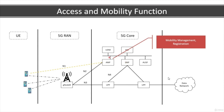That brings us to the AMF — access and mobility function. The AMF is primarily responsible for supporting devices as they move between different radio cells. In addition, it is responsible for establishing an encrypted signaling connection towards the device, so that the device can register itself, get authenticated, and be ready to access the internet.